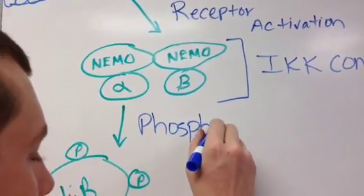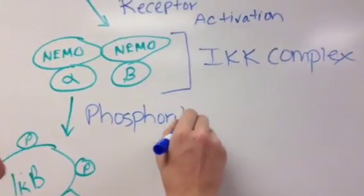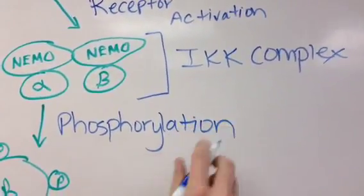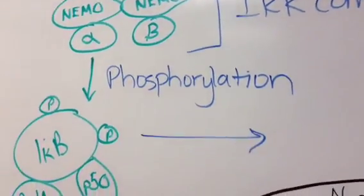The IKK complex then phosphorylates IKB, leading to degradation of the proteasome.